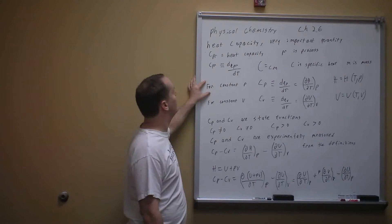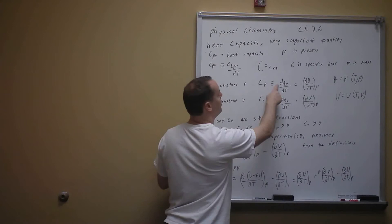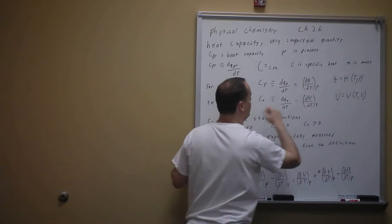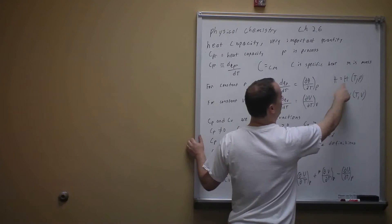One important type is for a constant pressure process: Cp is equal to the change in heat at constant pressure as it changes with temperature. And that equals the change in enthalpy with respect to temperature at constant pressure. We showed that the change in enthalpy equals dQ at constant pressure. This tells us that enthalpy is a function of temperature and pressure.